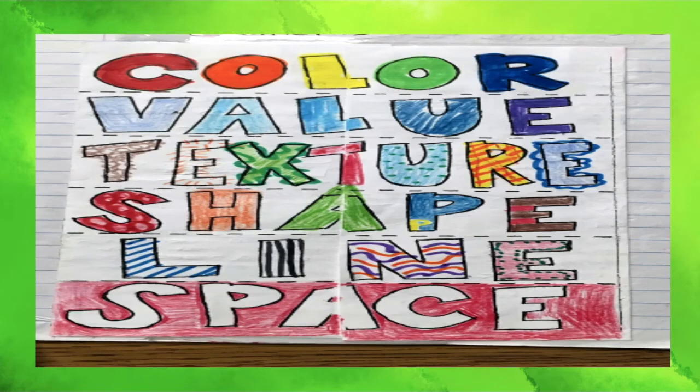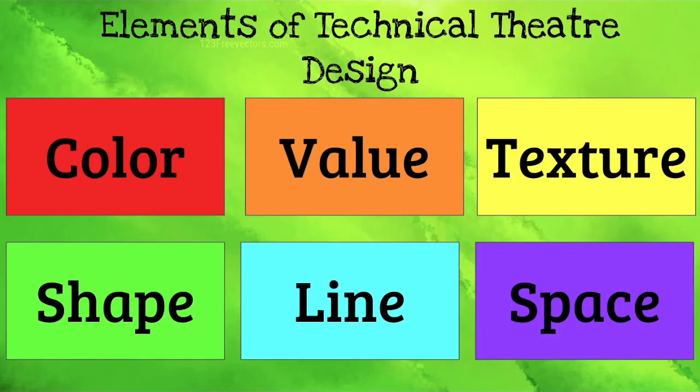So again we are going back to our six elements. Color, value, texture, shape, line, and space. When you look at these and think about these, you need to think about them every time you design, whether you're designing lights, costumes, props, or set. Think about each of these six elements of design as you design and be able to express to others how you are using them.